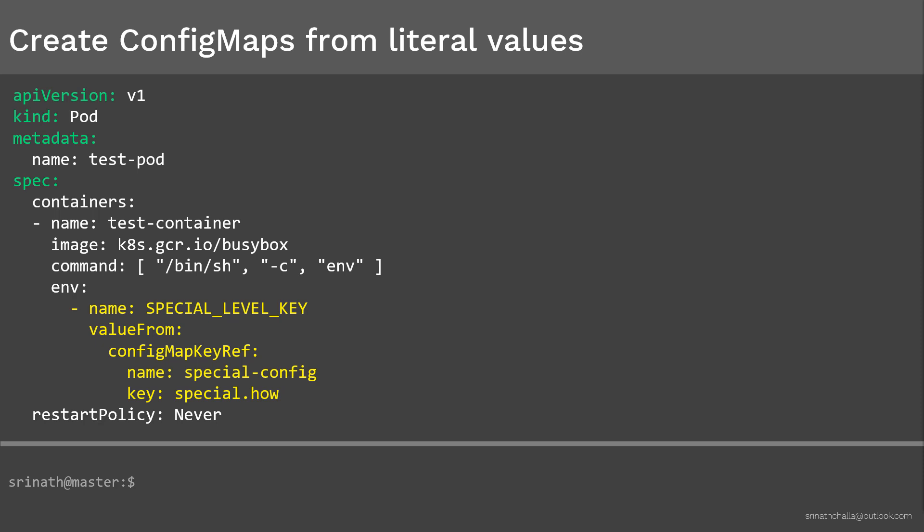Now, to create this pod spec, we use the kubectl create command. Once the pod is successfully created, it prints the environment variable and then exits immediately. To validate this, we use the kubectl logs command. As you can see, the environment variable SPECIAL_LEVEL_KEY is configured with a value of very. That's exactly the same key-value pair we passed into the special-config ConfigMap. This is how we can configure environment variables inside pods using literal values.